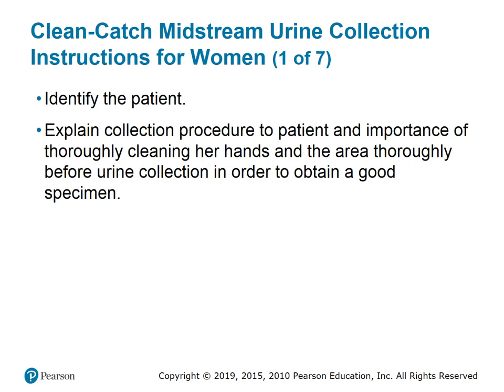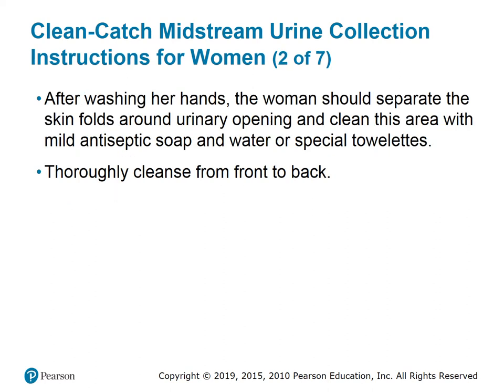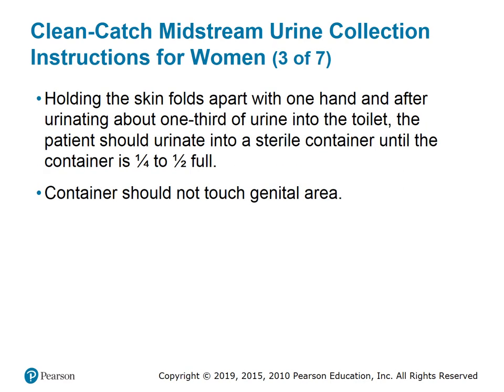For women: identify the patient and explain the collection procedure, stressing the importance of thoroughly cleaning her hands and the area before urine collection in order to obtain a good specimen. After washing her hands, the woman should separate the skin folds around the urinary opening and clean the area with mild antiseptic soap and water or special towelettes, thoroughly cleansing from front to back. These instructions need to be given to the patient verbally and sometimes with handouts prior to collection.